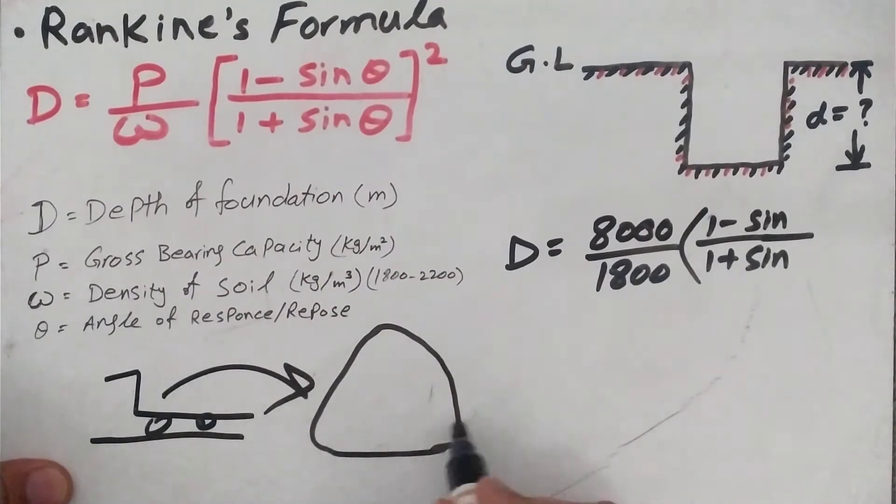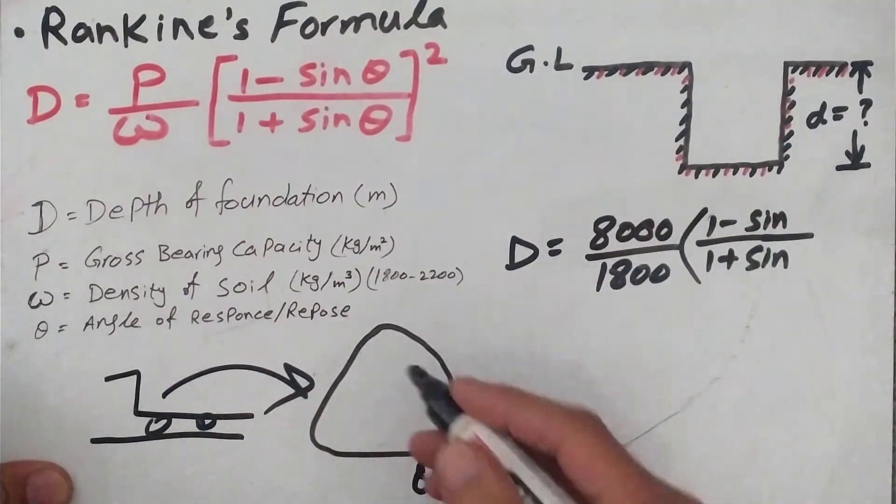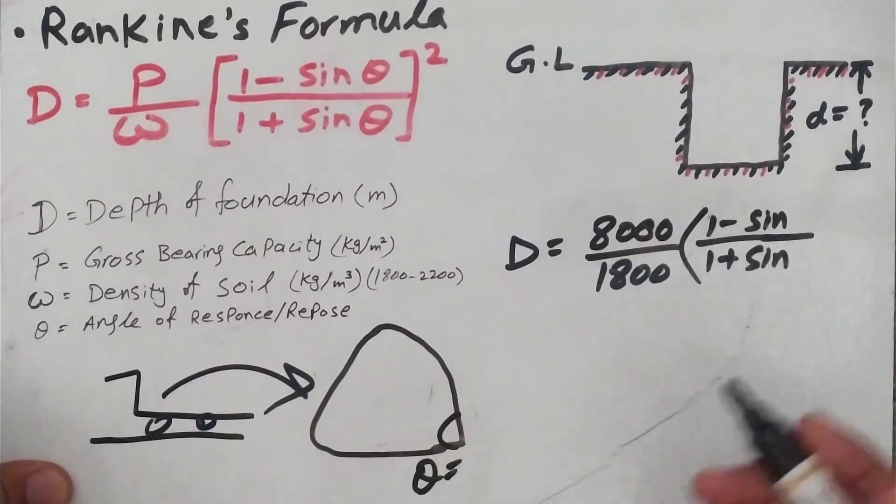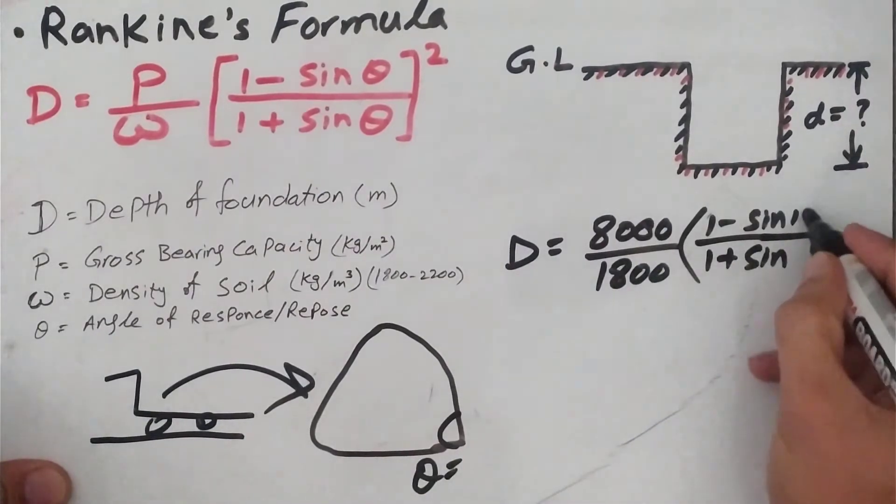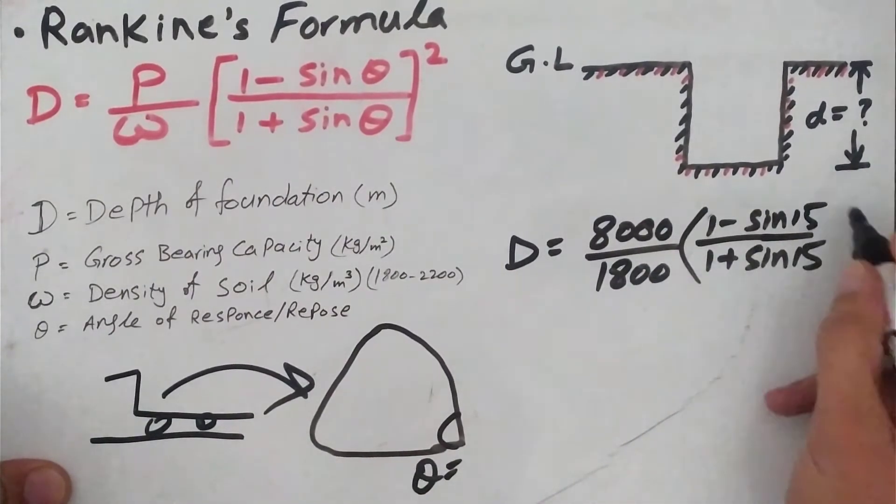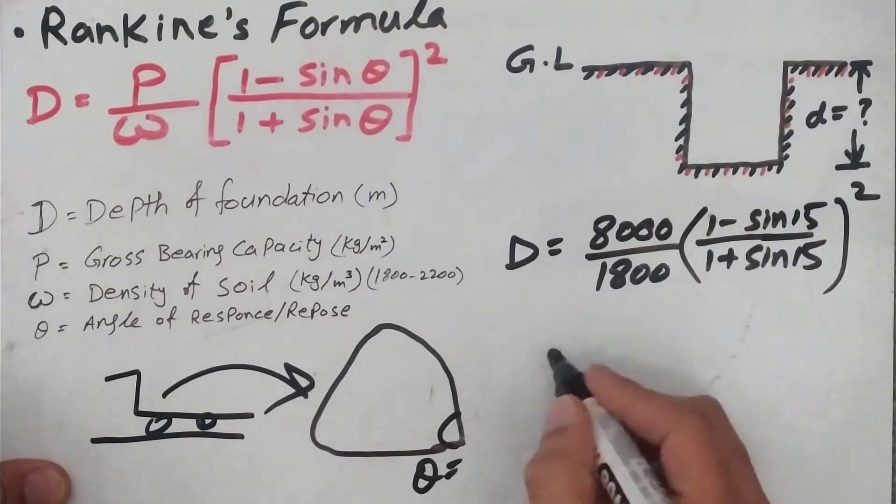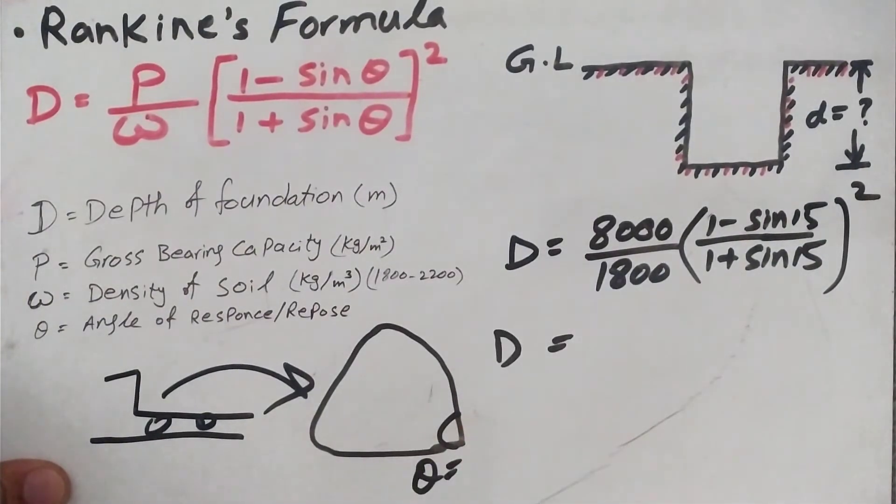Then this is an angle, for example, this is the angle of response or angle of repose of the soil. This could be anything, but in our case you can calculate that by finding out the soil specification. Theta in our case is 15 degrees, all over the square. If we put the formula in our calculator...